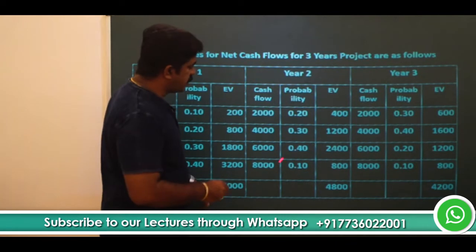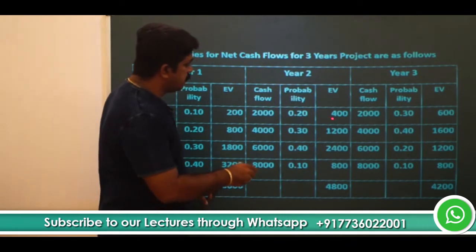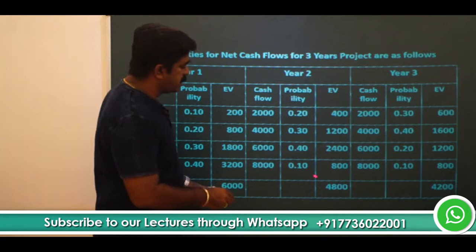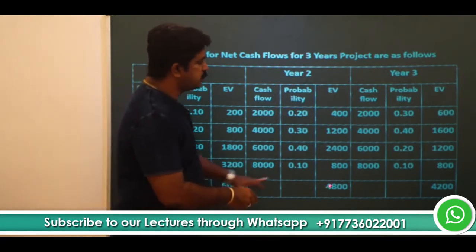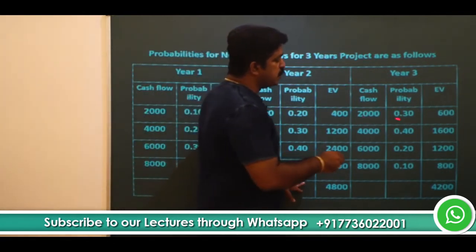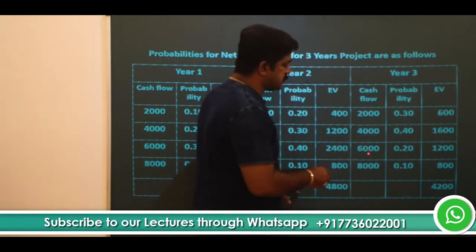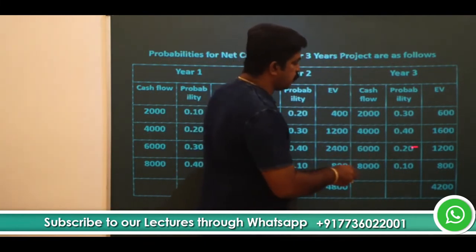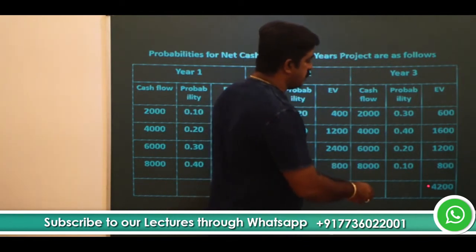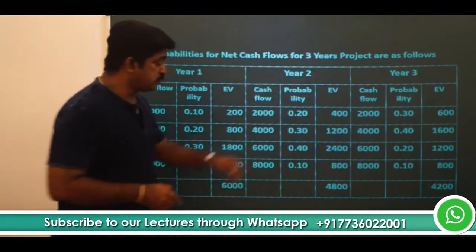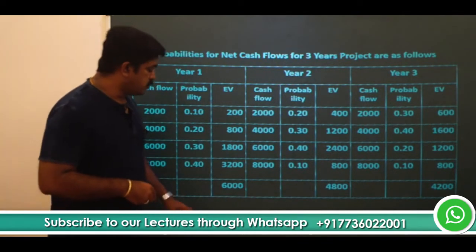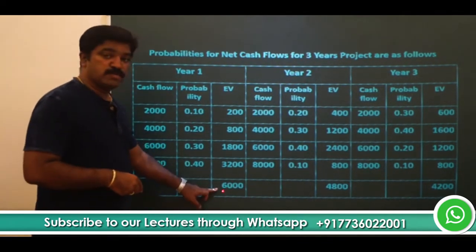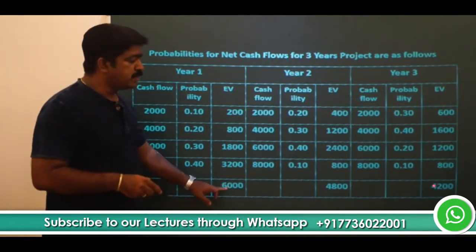Similarly for year 2, multiply each cash flow by its probability and total them to get 4,800. For year 3: 2000 × 0.3 = 600, 4000 × 0.4 = 1600, 6000 × 0.2 = 1200, and 8000 × 0.1 = 800. Totalling gives 4,200. So the expected cash flows for year 1, year 2, and year 3 are 6,000, 4,800, and 4,200 respectively.